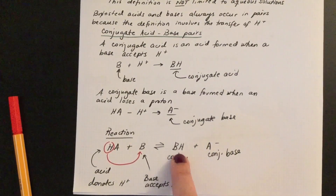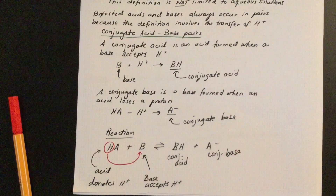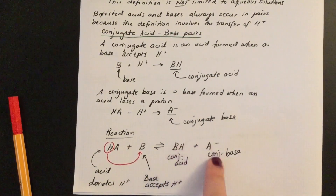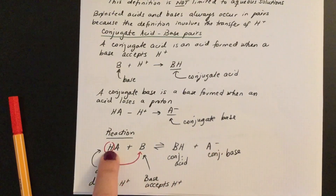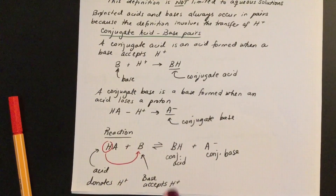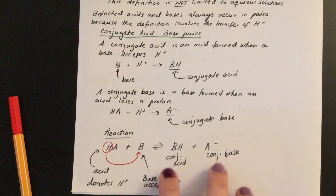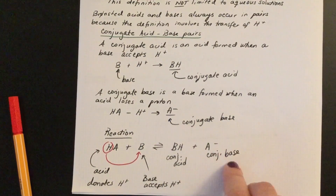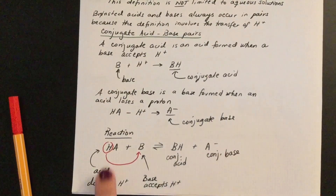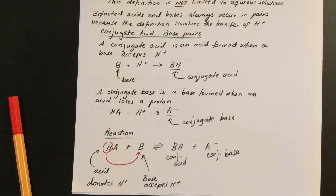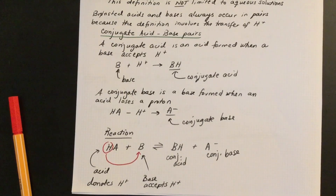BH does have a proton, so it can donate that proton to A⁻. If BH donates a proton to A⁻, then A⁻ becomes HA and BH becomes B. So BH is the conjugate acid — it acts as an acid in the reverse reaction — and A⁻ is the conjugate base, accepting the proton to regenerate HA. You can identify conjugates by looking at the reverse reaction: whatever acts as an acid in the reverse reaction is the conjugate acid.